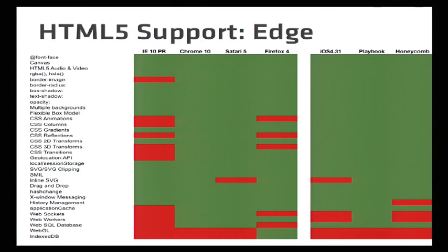Honeycomb doesn't support just a couple of things: WebSockets, workers, and history management. iOS 4.3 — inline SVG isn't working in the standard sense; you have to declare your whole page as an XHTML document. And they turned off WebWorkers and WebSockets for now. But pretty much all the high-level features are there in the edge browsers.